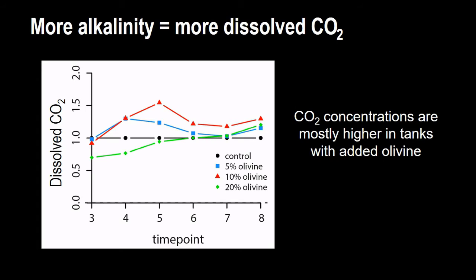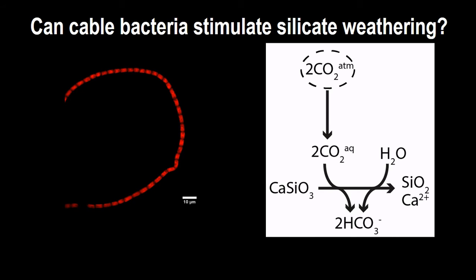Which is quite exciting, which means that we can actually use a natural phenomenon, the presence of cable bacteria, which you find pretty much everywhere on the globe. You can use cable bacteria to enhance silicate weathering and decrease the CO2 of the atmosphere. Thank you.